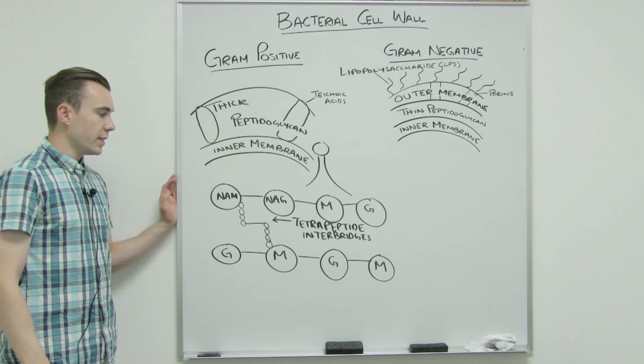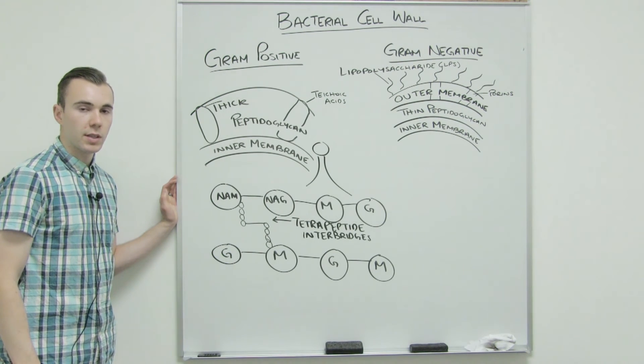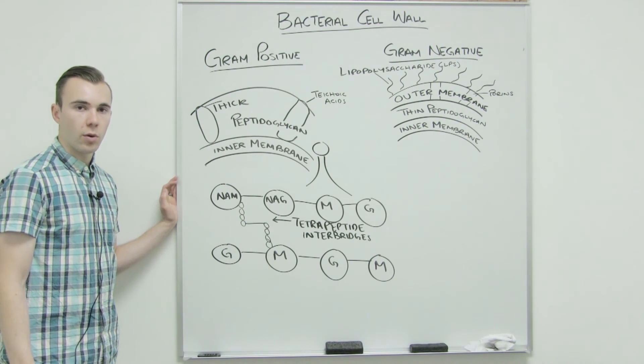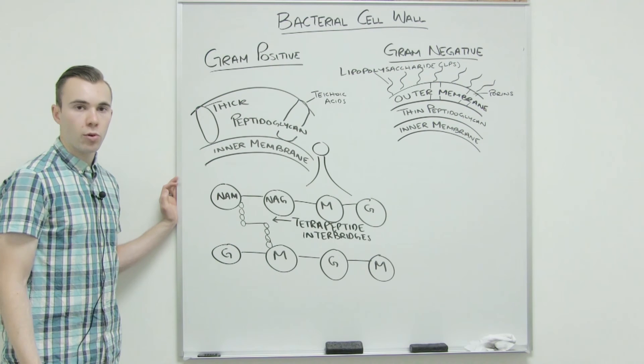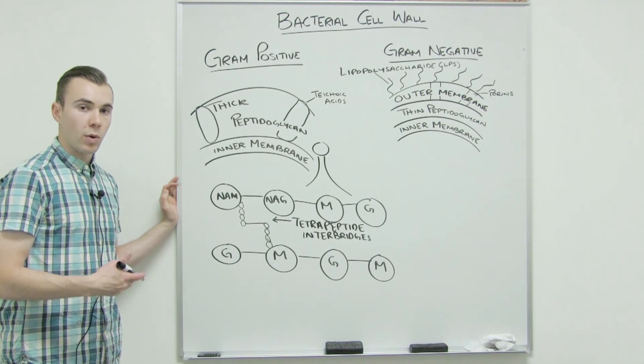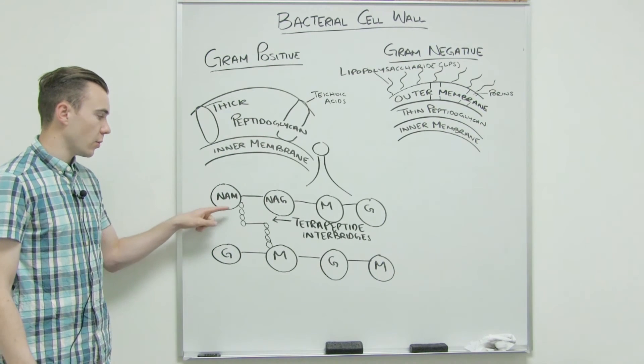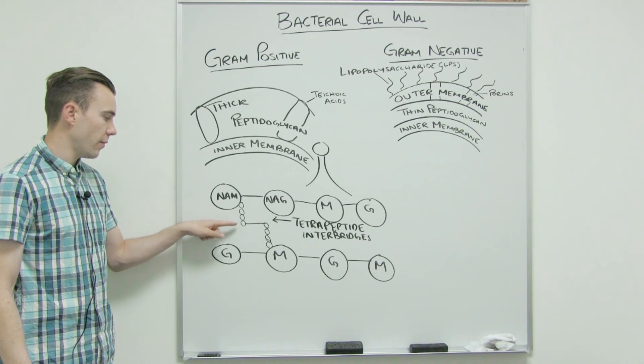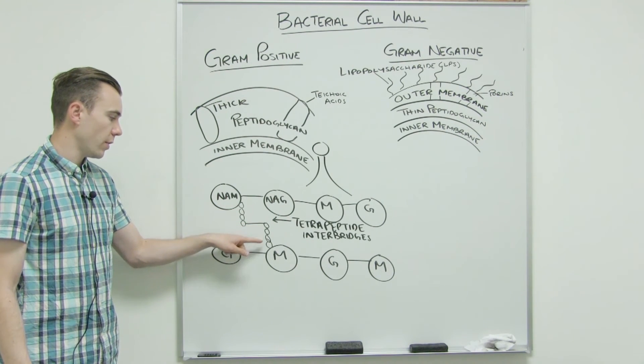And they're connected through what we call tetrapeptide interbridges. The reason it's called tetrapeptide interbridges is because tetra means four. Peptide is referring to a protein, or in other words, an amino acid, because amino acids are what make up proteins. So tetra, one, two, three, four. One, two, three, four.